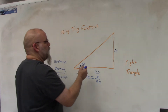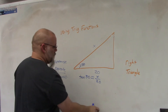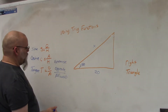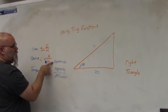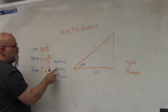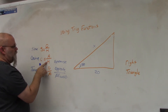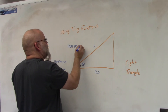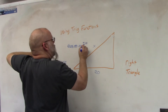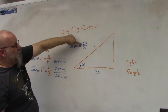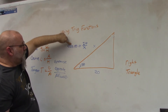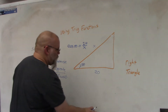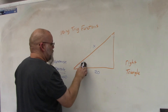Now if I wanted to find the hypotenuse, I look at what I have: I have this angle and the adjacent side, and I'm looking for the hypotenuse. So the equation would be cosine of 50 equals the adjacent side 20 over X. Since a fraction is another way of writing division, I would take 20 divided by cosine of 50, and that would give me the length of the hypotenuse.